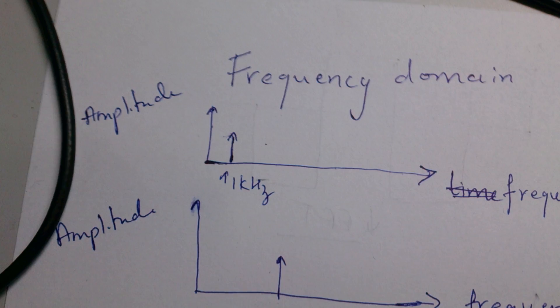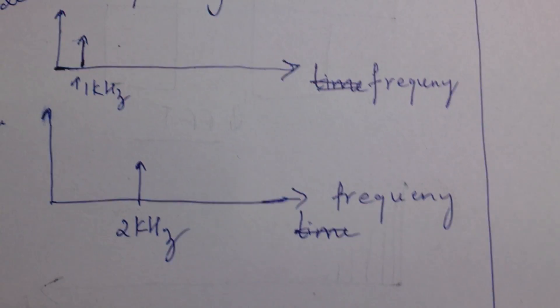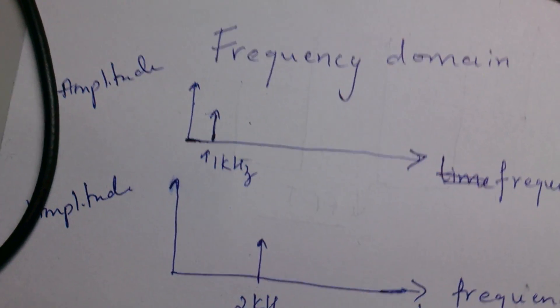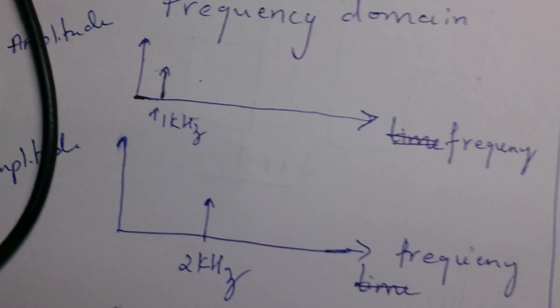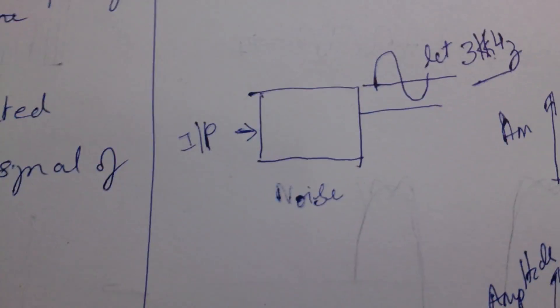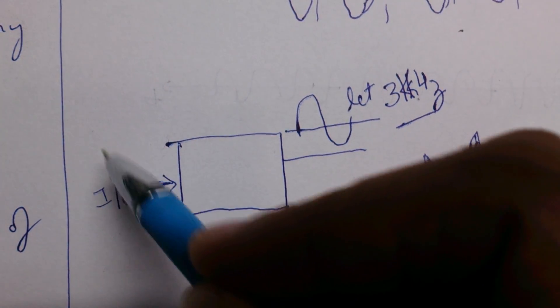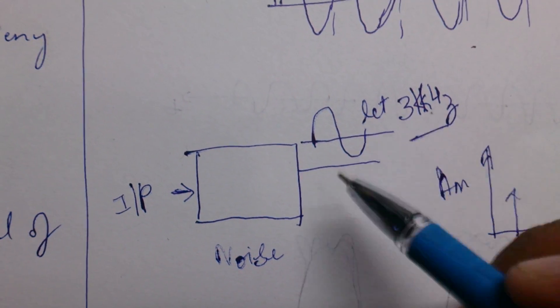Suppose you design a system which gives an audio output. The audio output may be typically in the range of three kilohertz to at max 20 kilohertz, which is the audible range. If you have designed a system which takes some input and it gives a three kilohertz signal.